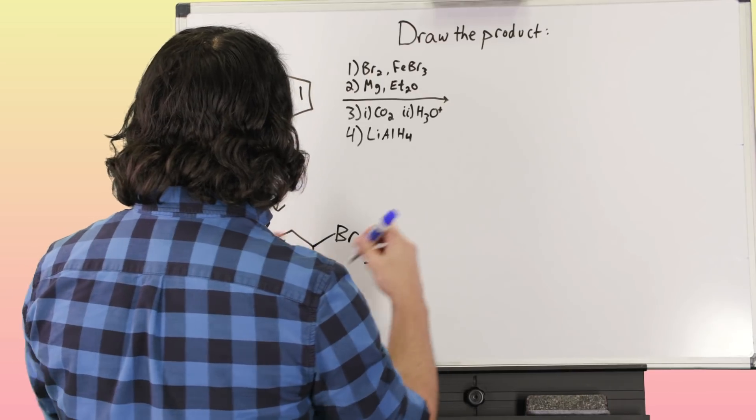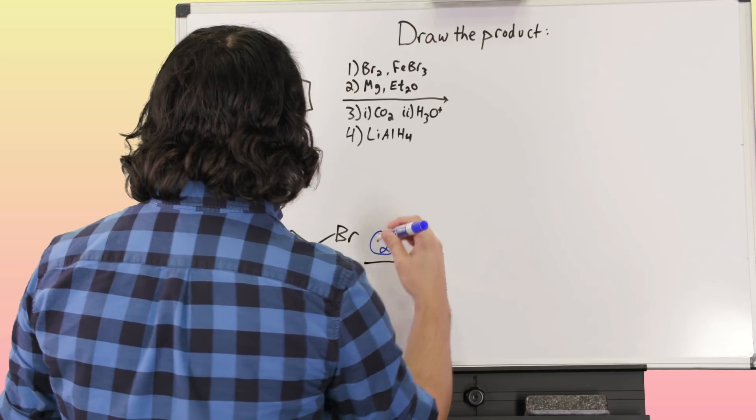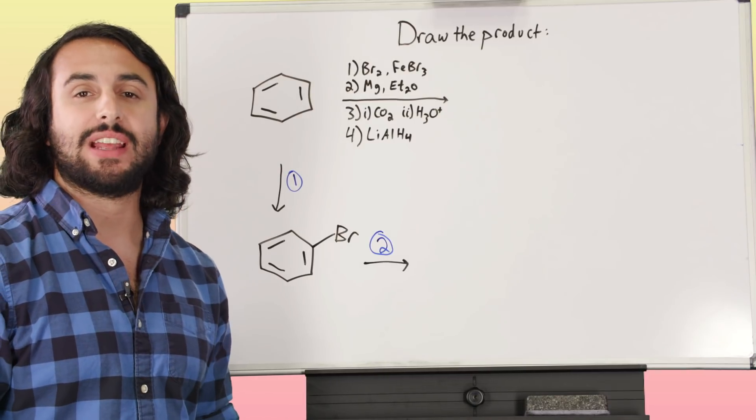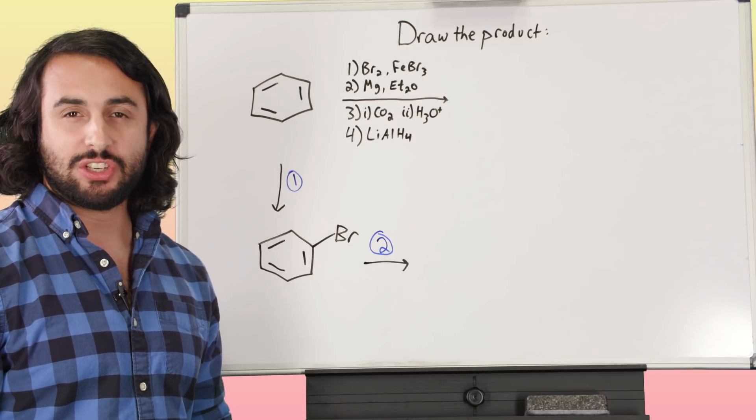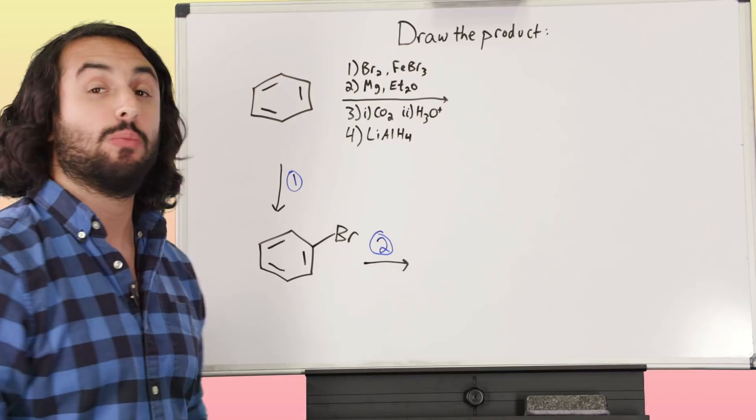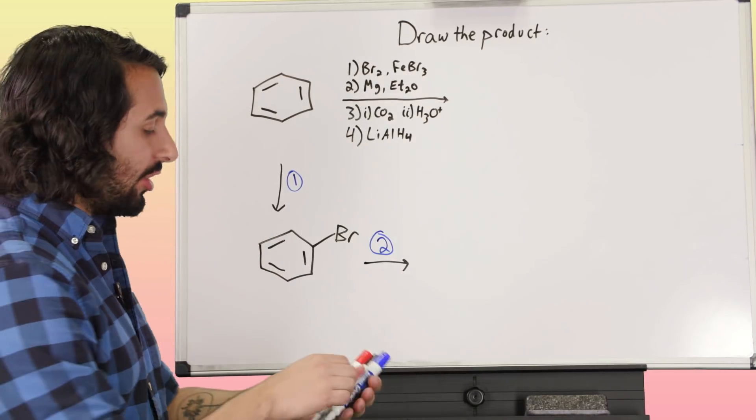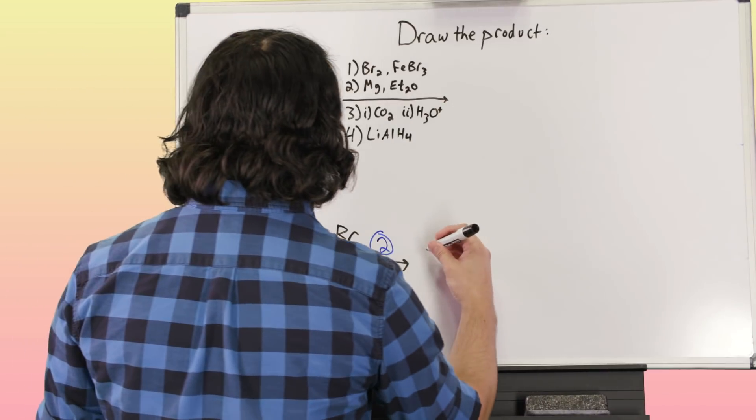Then we've got reaction two. What are we going to be using magnesium for? Probably at this stage of organic chemistry, there's really only one application. When we see magnesium, we're thinking Grignard. We know we're going to be generating a Grignard reagent, so let's go ahead and make that Grignard reagent.